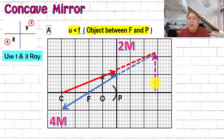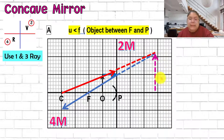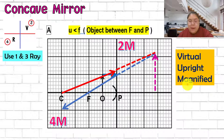Since the image is in part two - above the horizontal line - we draw it using dotted lines. The image is drawn upward from the horizontal line. The characteristics: first, it is virtual because it is above the horizontal line. Second, it is upright - both object and image have the head at the top. Third, the size is bigger - we call it magnified. Virtual and upright are always partners.